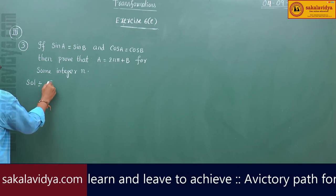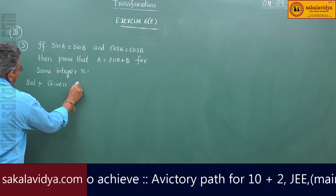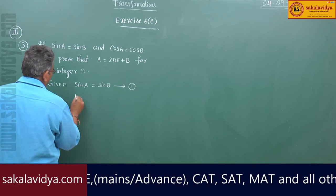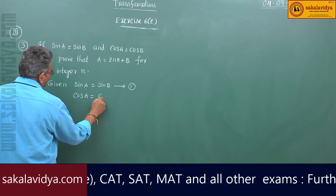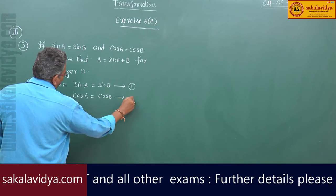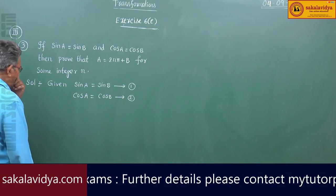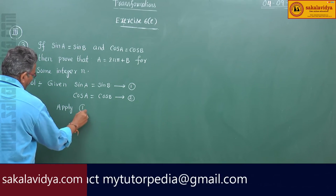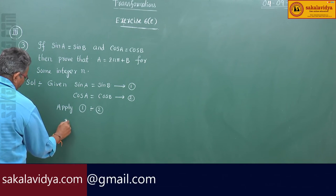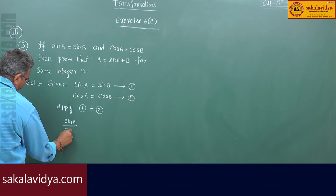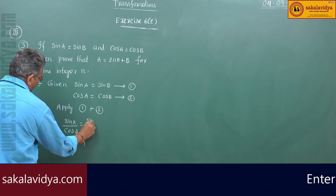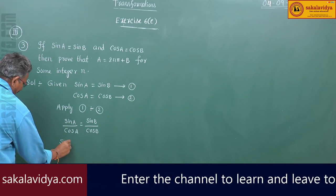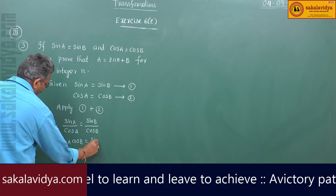Given: sin a equals sin b — this is the first equation. Second one is cos a equals cos b. Now, apply equation 1 divided by equation 2: sin a by cos a equals sin b by cos b. Cross multiply to get sin a cos b equals sin b cos a.